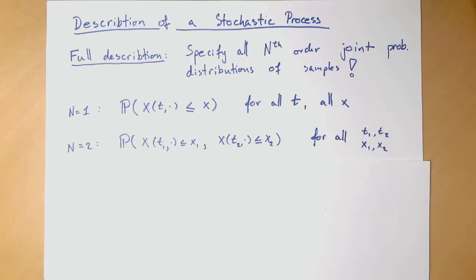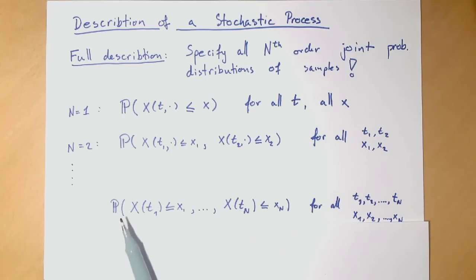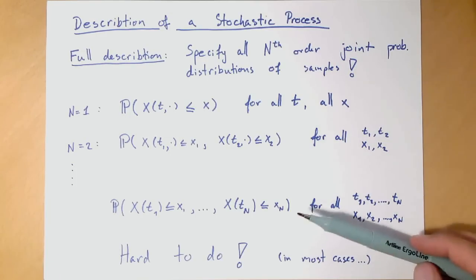And actually, we need it for n equal 3, 4, 5, and so on. For any n, we would need to specify the whole joint probability mass function in this form. And we would need to do that for all time, all combinations of n times for all x's. And that's hard to do. It's a lot of work, and it's not always possible. In some cases though, in very few cases, it can be done.